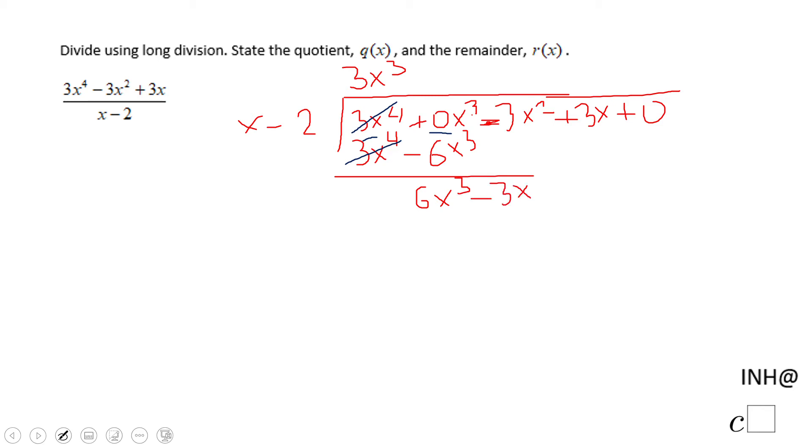And we're going to do the same thing, a guess and check strategy. What do you multiply x by to get 6x³? That will be 6x². 6x² times x, 6x³. 6x² times negative 2, negative 12x².